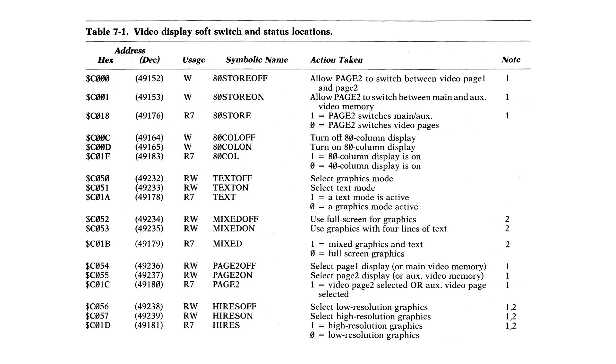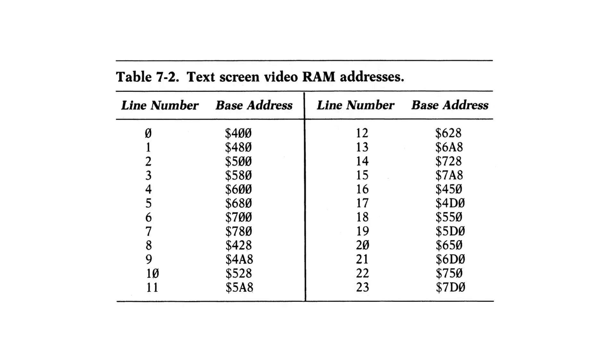Jumping back to the Apple again, the video display mode was selected by some soft switches located at the C1000 page. I'll go over this in a lot more detail in an upcoming video. In text mode, the data to be displayed is located at 4000 to 7FF hex, and this is for a 40 character by 24 row display.